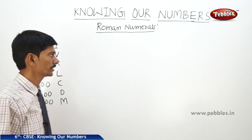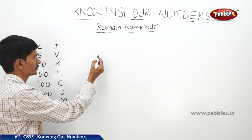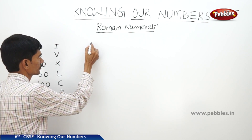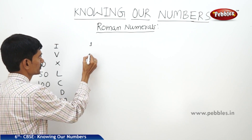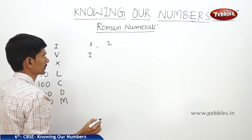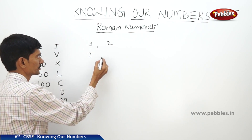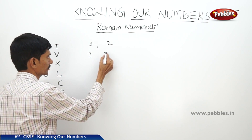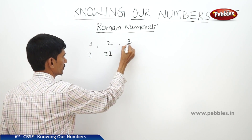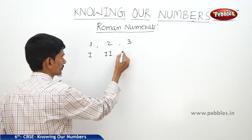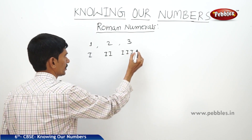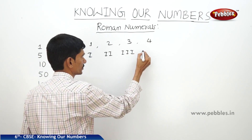Now we can write Roman numerals for Hindu-Arabic numerals. For example, 1 means I, 2 is written as II, 3 as III. For 4 we need to follow some rules when representing it.